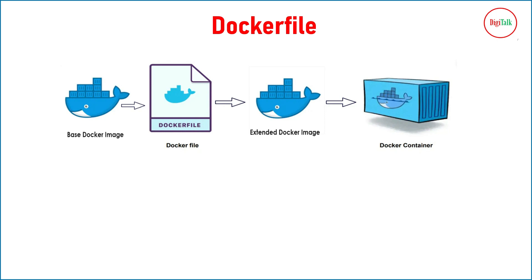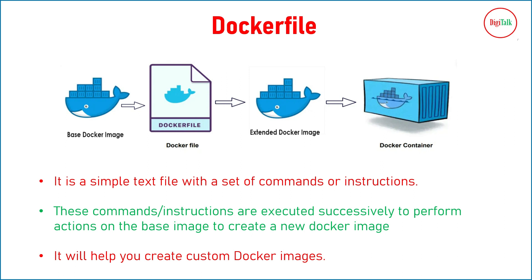For example, if we have a base image of an Apache web server, after installing Apache we need to deploy our web applications and do a lot of configurations in files like httpd.conf. So once we have the base Apache image, whatever website we want to deploy and whatever configurations we want in the config files — all of these customizations can be defined in the Dockerfile. It will take the base Apache image, apply all the customizations, and create the extended Docker image so we can start our web server.